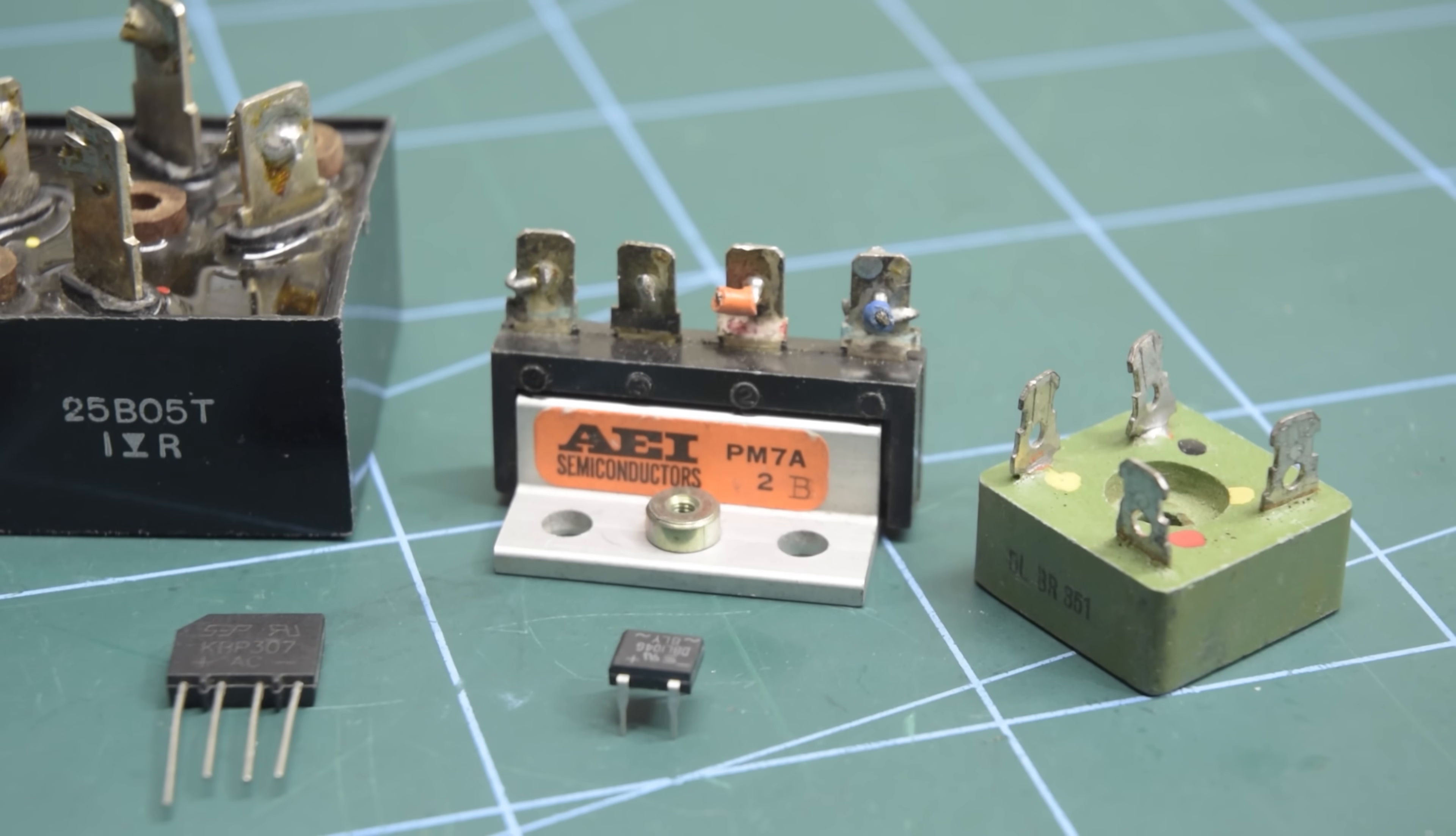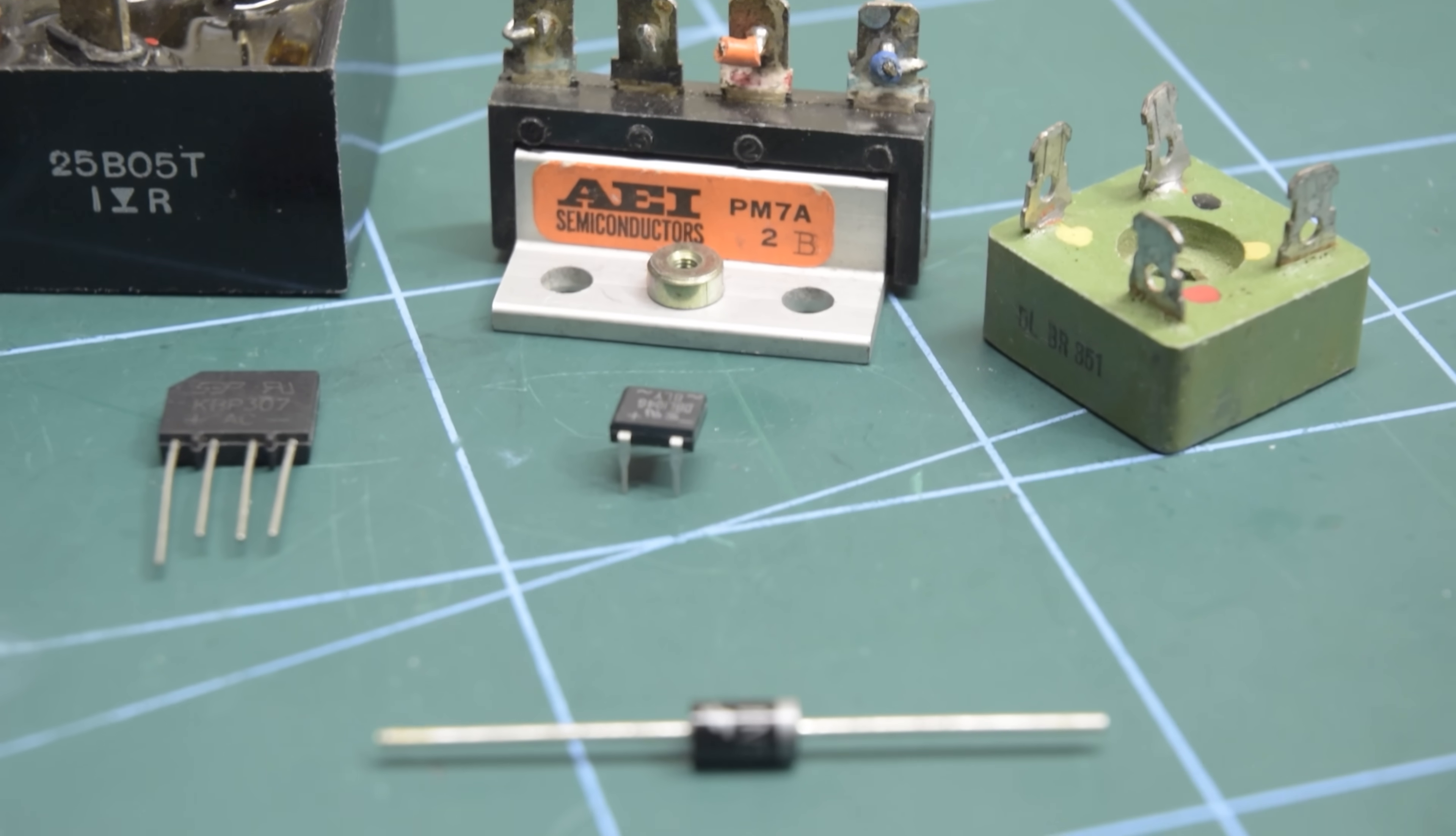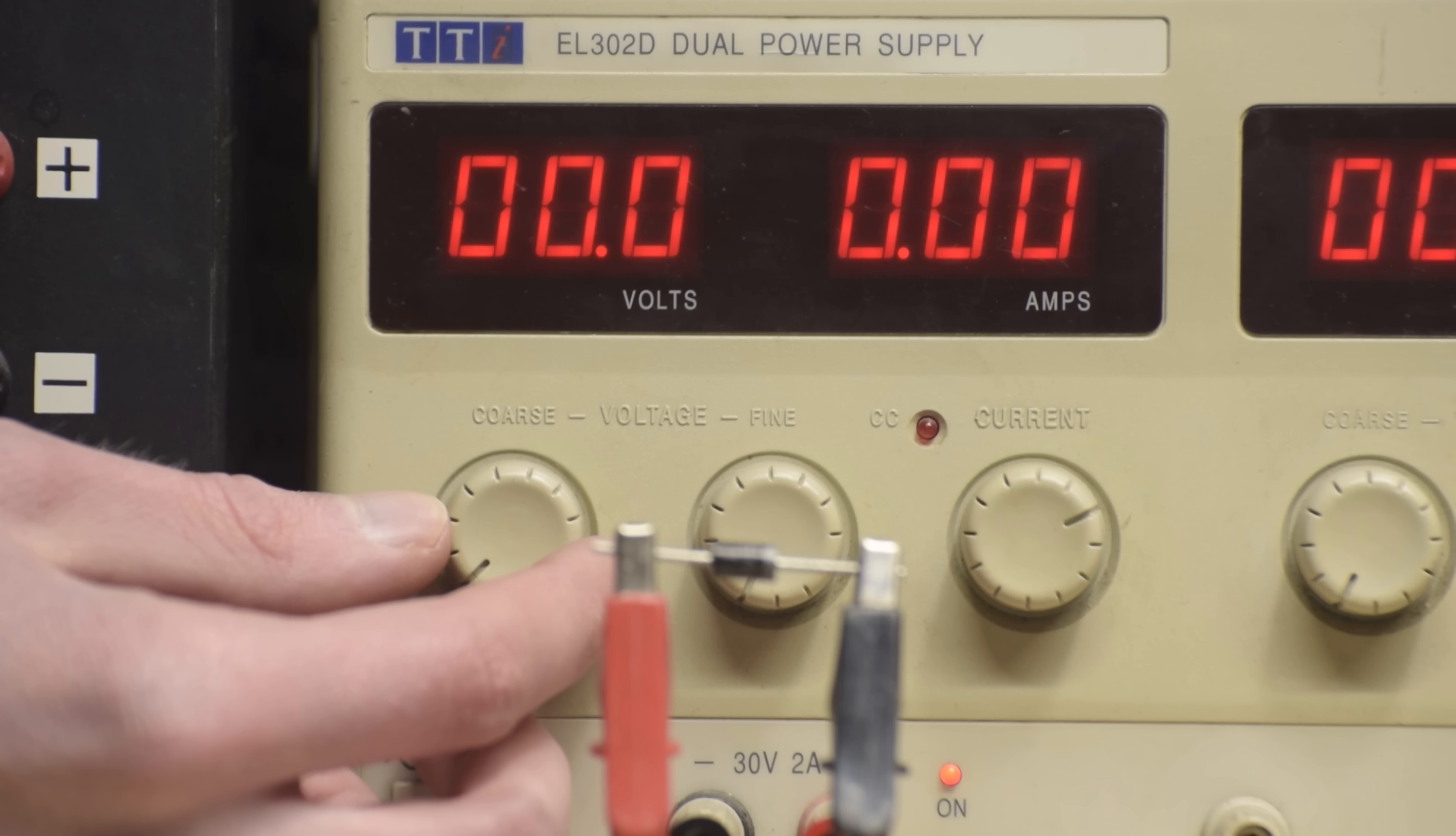But there's always been a problem with the way that these rectifiers turn AC into DC, and it stems from the operation of the diodes. Just as is the case for a mechanical one-way valve, diodes need some pressure, or voltage, to push them open and allow current to flow.